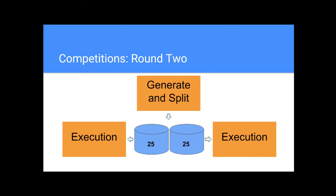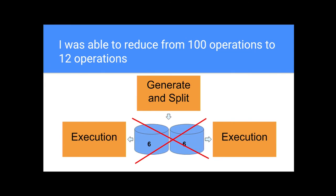It worked. I now had a champion archive of 50 operations. I split again into two archives of 25 — the competition worked again. Then archives of 12 and 13 — competition worked again. I was able to reduce it down to 12 operations, and the panic now takes 5 minutes. I've reduced it from 8 hours to 5 minutes and deleted about 90 operations from my data set. Things are converging to something I might be able to understand.